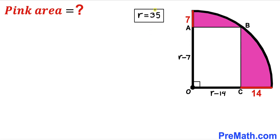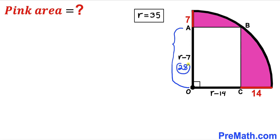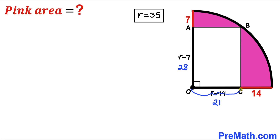Our radius r turns out to be 35 units. Substituting into OA: 35 − 7 = 28, so OA = 28 units. Substituting into OC: 35 − 14 = 21, so OC = 21 units.